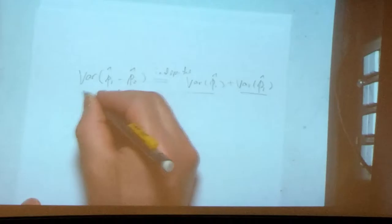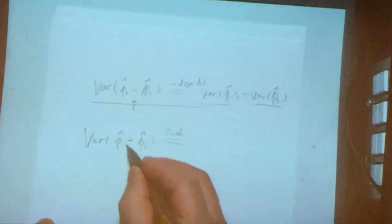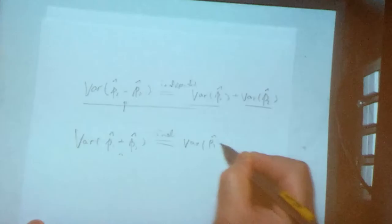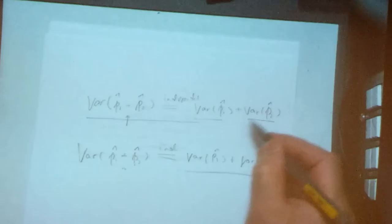That doesn't make any sense. Basically, if you know this, you should be able to figure out what is the variance under the independence assumption. Make sure you understand that there is no difference whether it's plus or minus. The variance of this guy is the same as the variance of this guy.